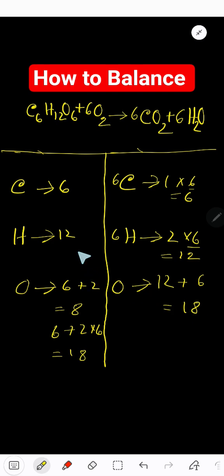Now look, 18, 18, 12, 12, 6, everything is balanced. So we can say that this is the balanced chemical equation.